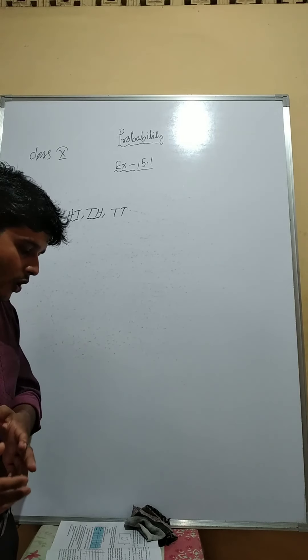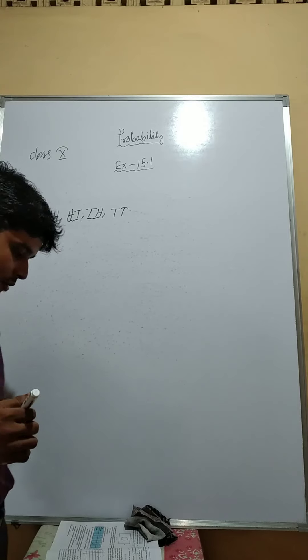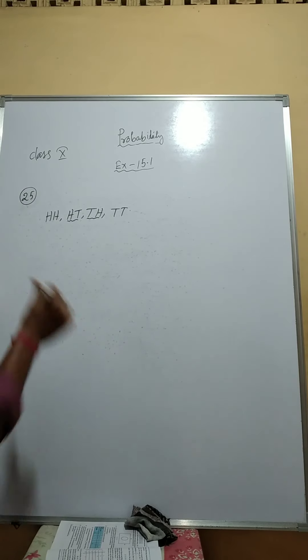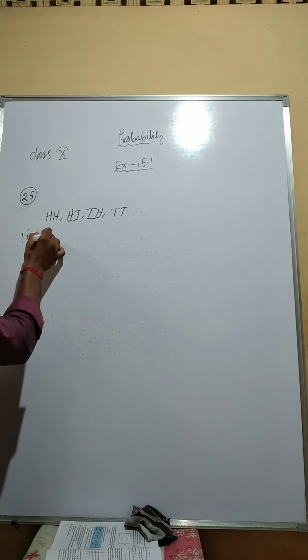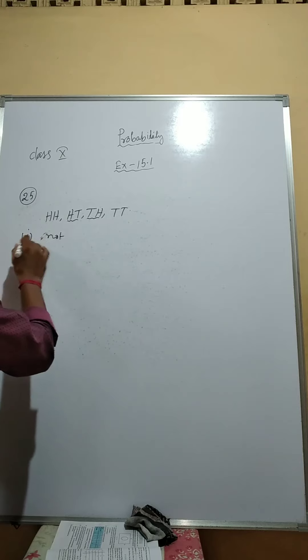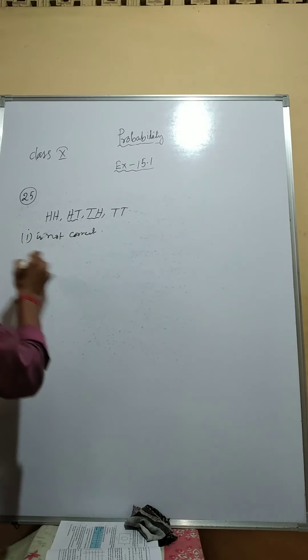The probability will be not equal to 1 by 3. That means, Roman 1 is not correct. That means, it is incorrect.